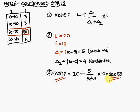The main thing to remember in continuous series mode problems: identify the highest frequency in the frequency column and mark that row with a rectangular box.